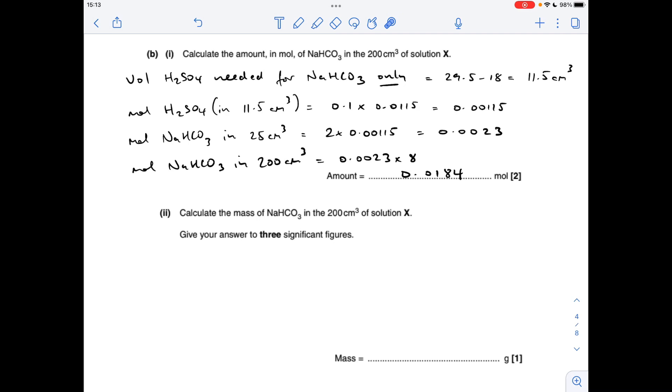So part B, it switches to asking about the sodium hydrogen carbonate. This is where it gets tricky, I think. The first thing you've got to do is work out how many moles of sulphuric acid is needed just for the sodium hydrogen carbonate. Those two titre values in the table, if we subtract them, 11.5 cm cubed will be needed to neutralise just the sodium hydrogen carbonate.